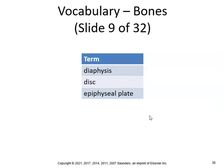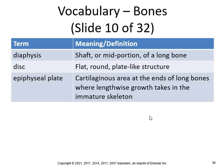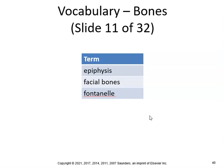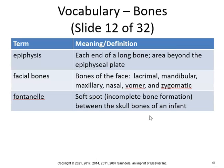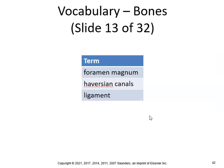The diaphysis is the shaft or mid portion of a long bone. A disc is a flat, round plate structure. The epiphyseal plate is the cartilaginous area at the ends of long bones where lengthwise growth occurs in the immature skeleton. The epiphyses are each end of the long bone beyond the growth plate. Facial bones include the lacrimal, mandibular, maxillary, nasal, vomer, and zygomatic. Fontanelles are a baby's soft spots — incomplete bone formation between skull bones in an infant.